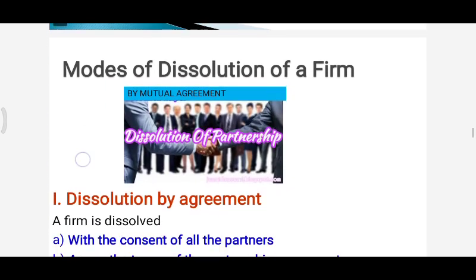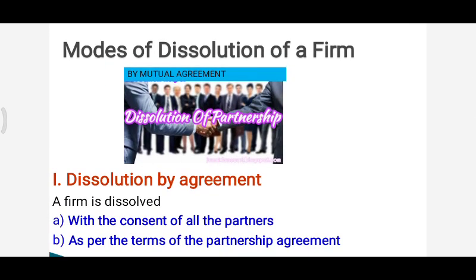The first mode of dissolution of firm is by mutual agreement. A firm can be dissolved with the consent of all the partners, or it can be dissolved as per the partnership agreement. If all the partners agree for dissolution of the firm, then the firm can be dissolved — that comes under dissolution by mutual consent of all the partners.